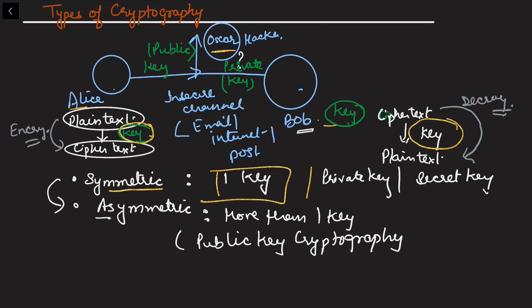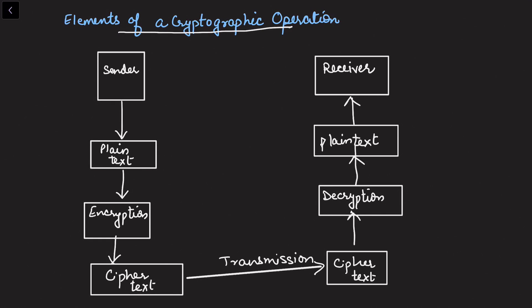There is a third category also, that is what we call hash function. Here are the elements of a cryptographic operation. We have the sender at the first stage which has access to plaintext, and he wants to share this information of the plaintext to the receiver.